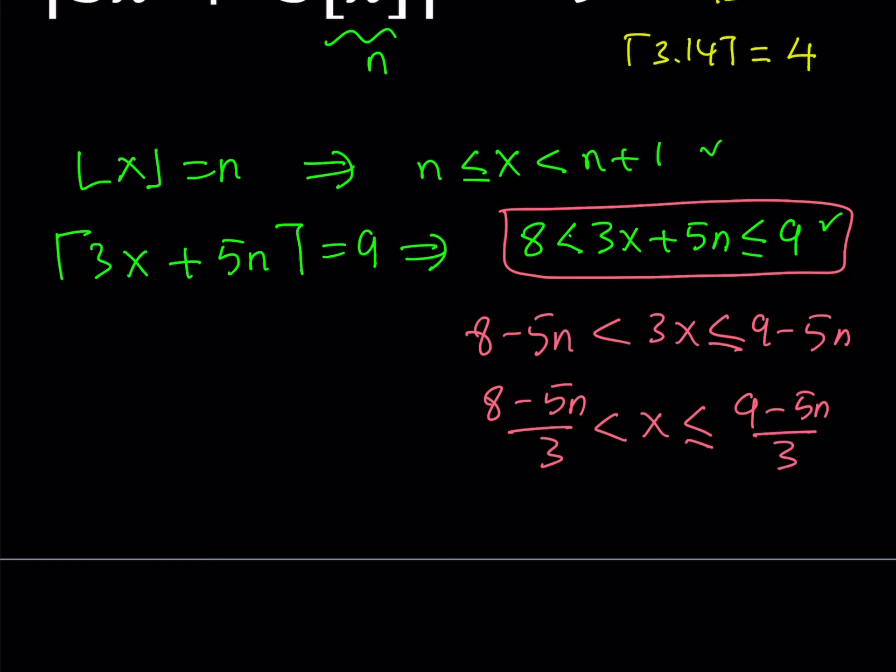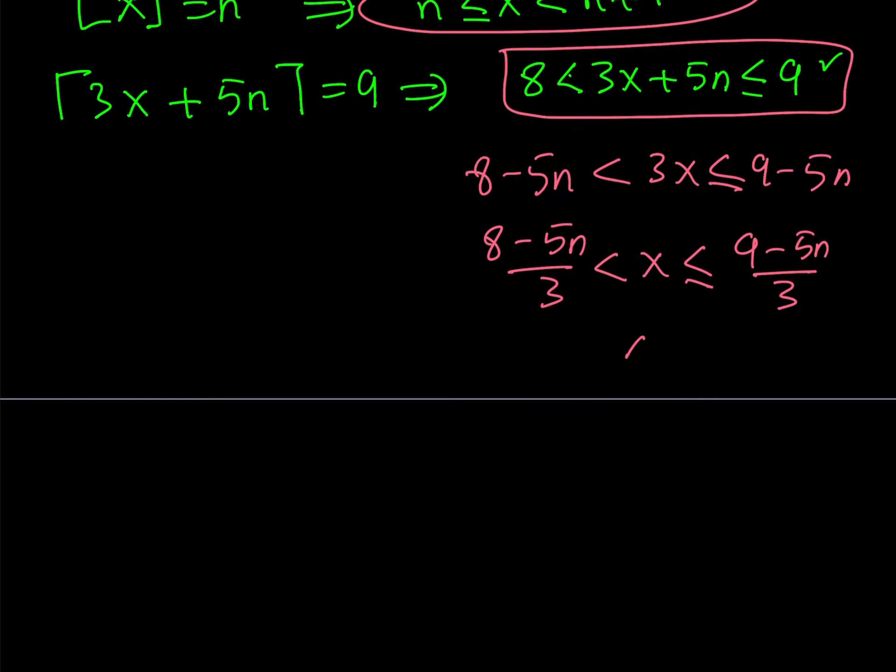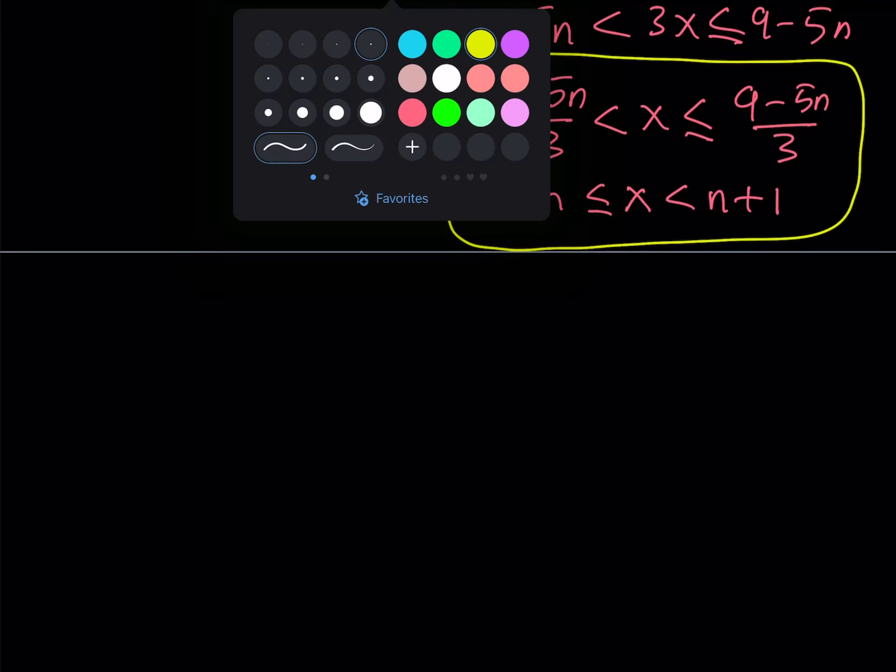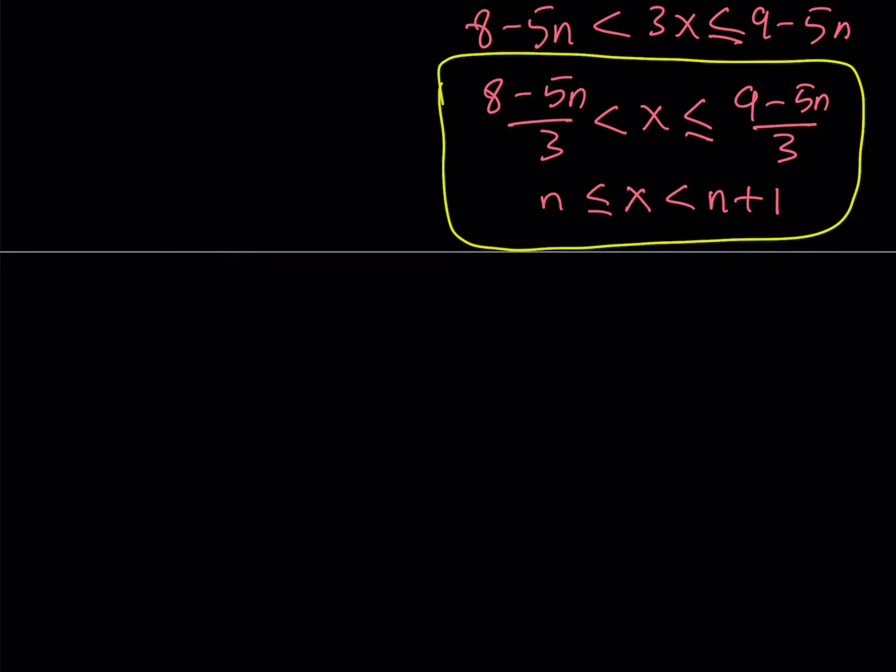So that's one of my inequalities that I'd like to be using. And the second one comes from here. x is between n and n plus 1. So I have two inequalities, it's kind of like a system of inequalities. Let's solve this system. We have two variables, but we can work with the boundaries. We have a lower bound and an upper bound, so we can compare them.